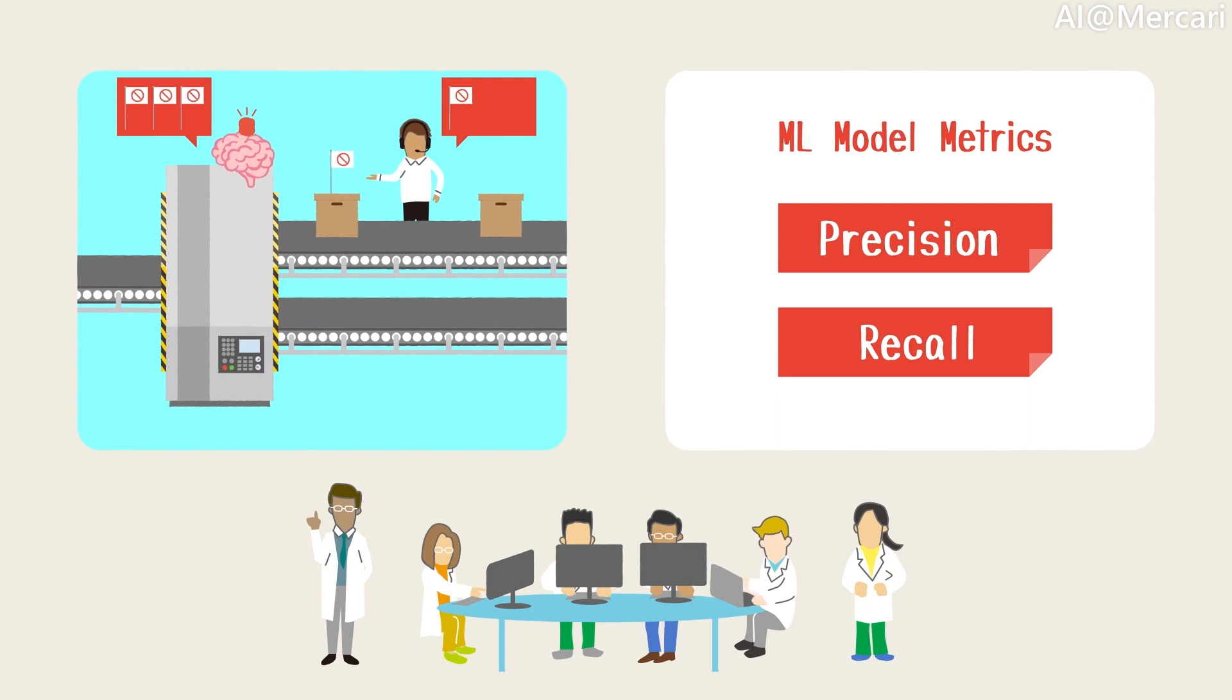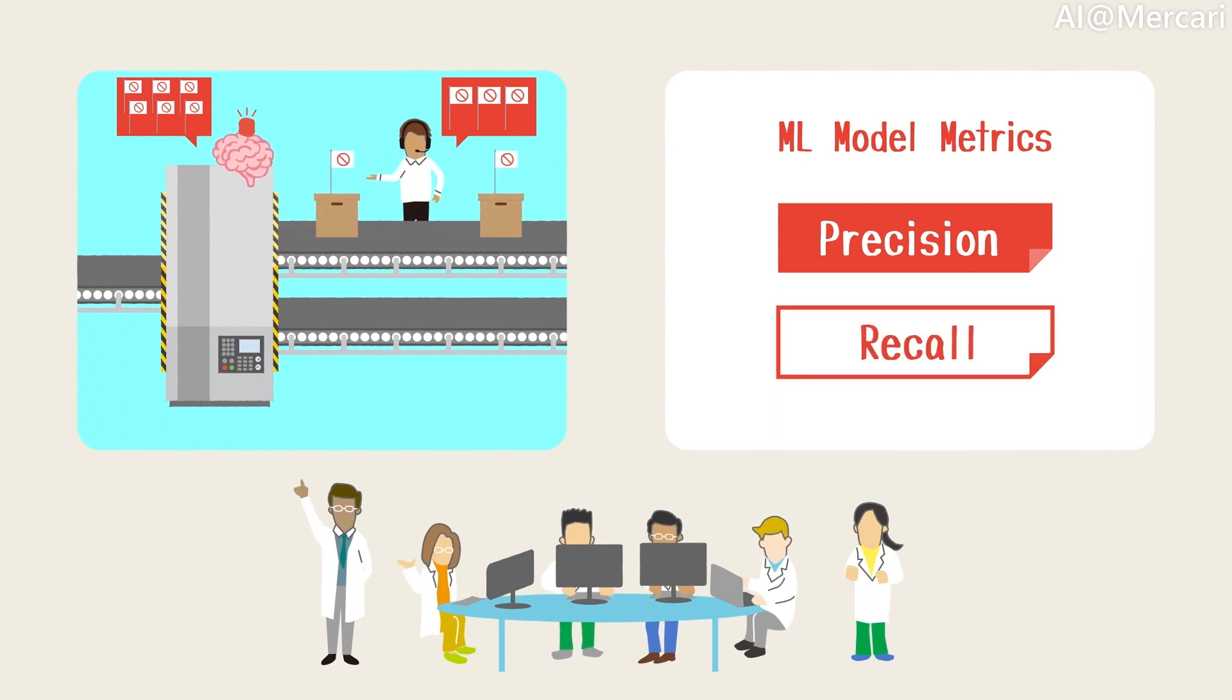Recall is when the number of items that are flagged by CS operators are divided by the number of items that actually should be flagged. Between the two, recall can only be measured offline, since there is no way to know the real, total number of items that should be flagged in the real marketplace.